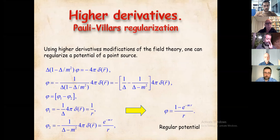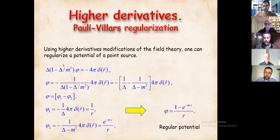To briefly describe the role of non-locality, consider just the Newton potential and its non-local higher-derivative generalization. It is described by an equation that can be written as the difference of two solutions — one is just the usual Newtonian potential and the other is a Yukawa-type potential — and the solution is the difference of them.